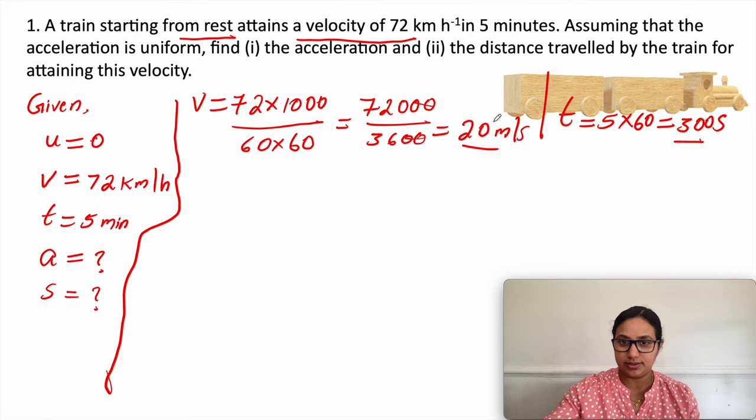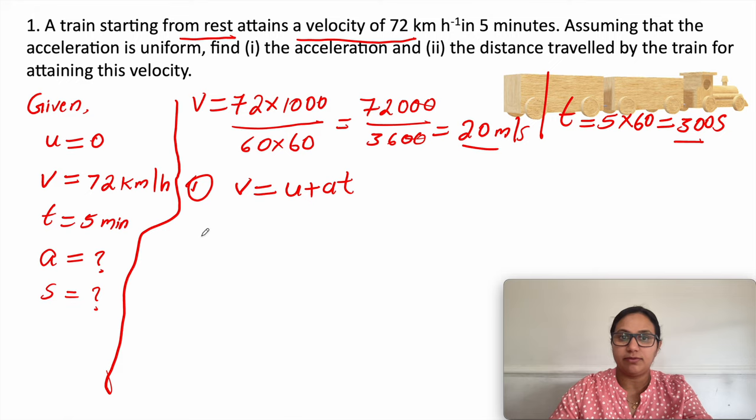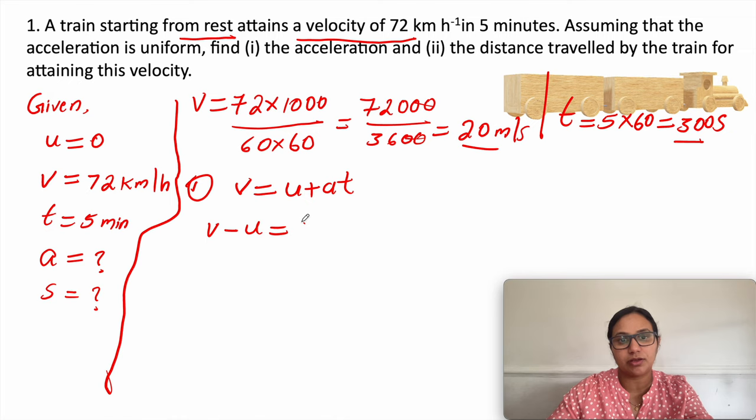First we calculate acceleration. The relation connecting velocity, time, and acceleration is v = u + at. Final velocity, initial velocity, and time are all given, and we need to calculate acceleration. Rearranging: v minus u equals at, so a equals v minus u divided by t.